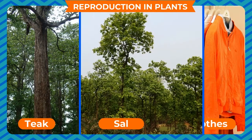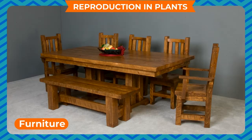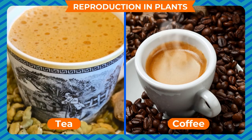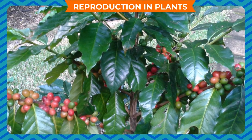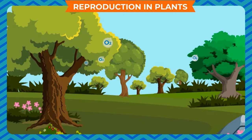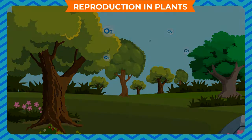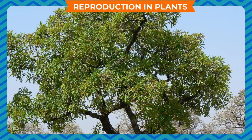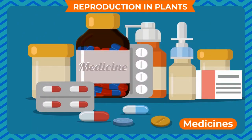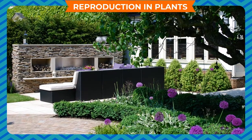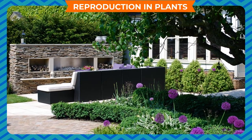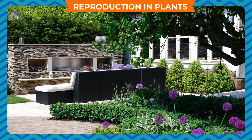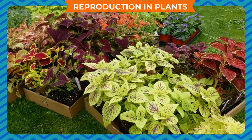Wood like teak, sal, and cedar for furniture, and things like rubber, gum, tea, and coffee are also obtained from plants. Plants release oxygen which is essential to breathe for humans and animals. Plants are also a source of various medicines, and they make our surroundings green and add beauty with their colorful foliage and flowers.